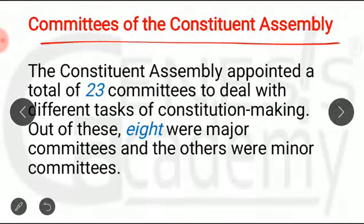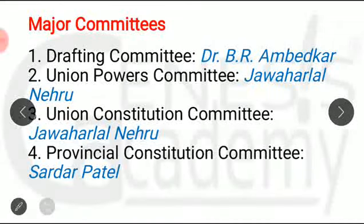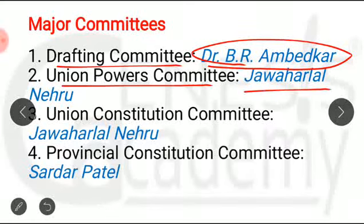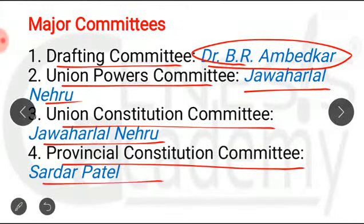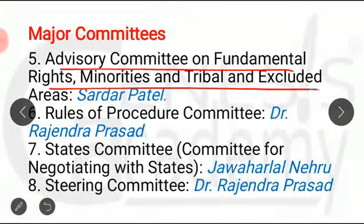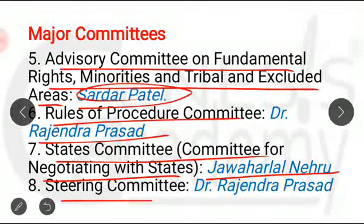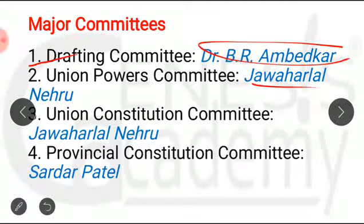Committees of the Constituent Assembly: the Constituent Assembly appointed in total 23 committees — 15 were minor and 8 were major committees. The important committees are: the Drafting Committee, chaired by Dr. B.R. Ambedkar; the Union Powers Committee, headed by Jawaharlal Nehru; the Union Constitution Committee, headed by Jawaharlal Nehru; the Provincial Constitution Committee, headed by Sardar Vallabhbhai Patel; the Advisory Committee on Fundamental Rights, Minorities, and Tribal and Excluded Areas, headed by Sardar Patel.